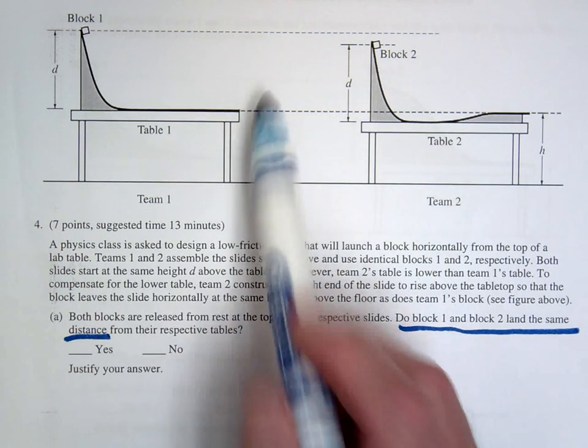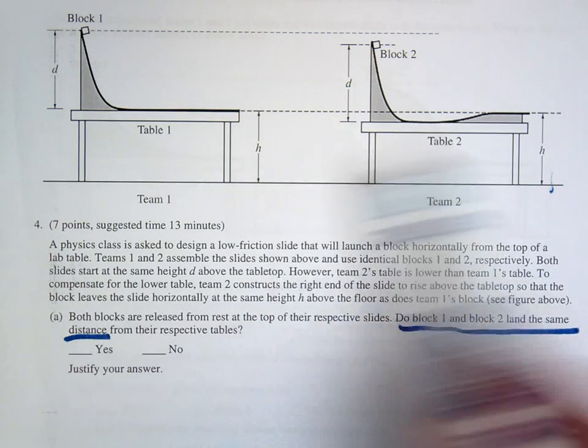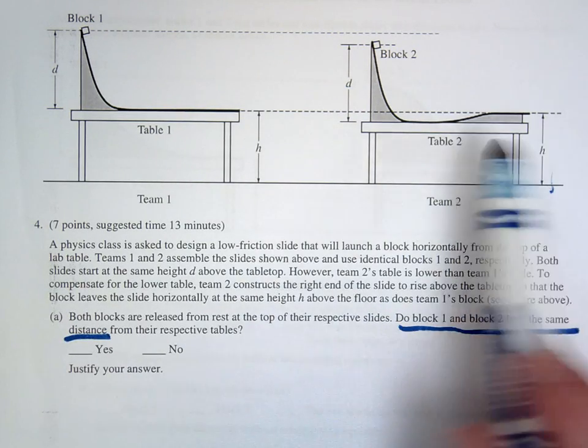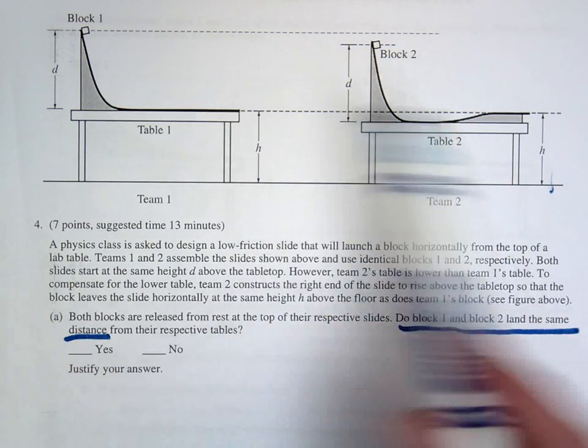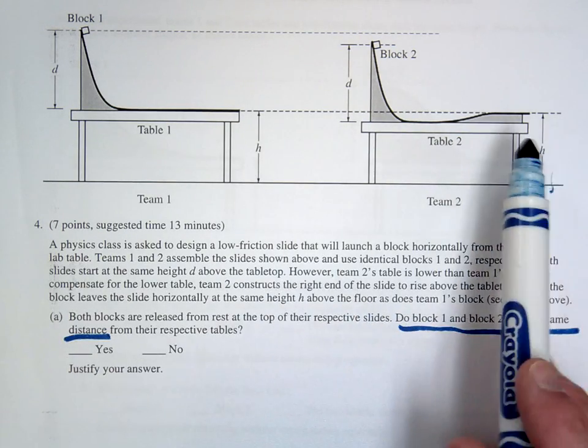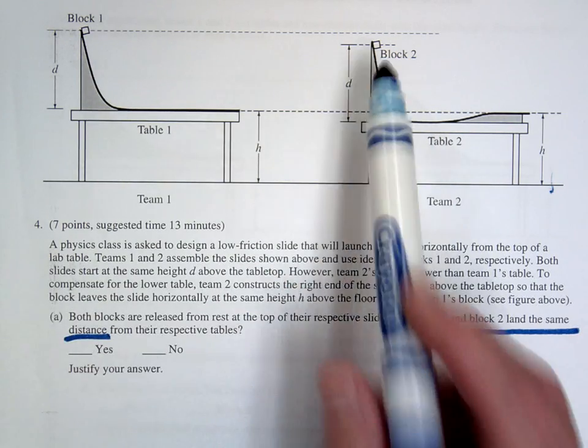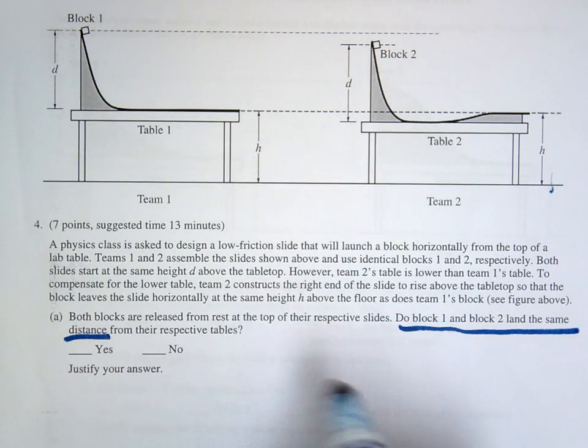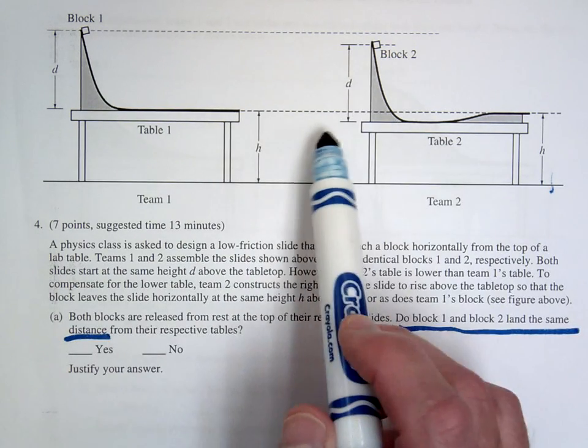The first thing you should notice is that the height is the same. Since the height is the same, you know the time in the air is the same. So therefore you have to figure out which one's going to be moving faster or are they moving the same speed. The key idea here is to notice that in both cases they start with the same amount of potential energy. They both have potential energy at the top, D above the table.